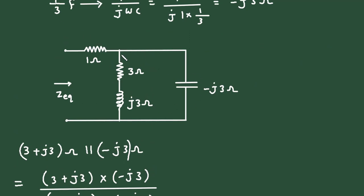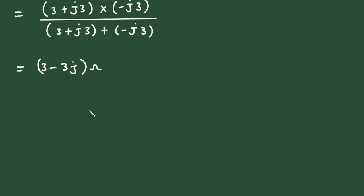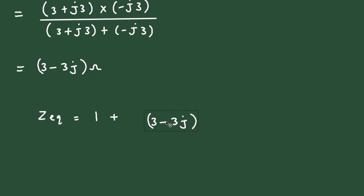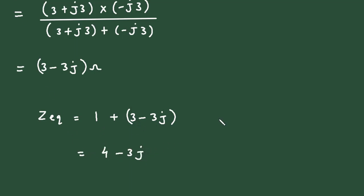These two are in series with the 1 ohm resistor. Therefore, Zeq is equal to 1 plus that value. Adding 1 plus 3 gives 4, so Zeq equals 4 minus 3j ohm.